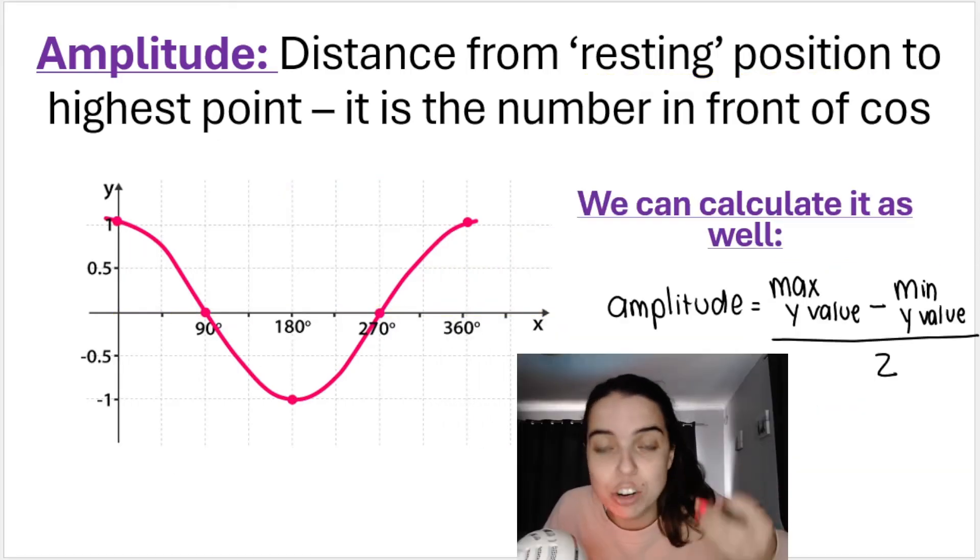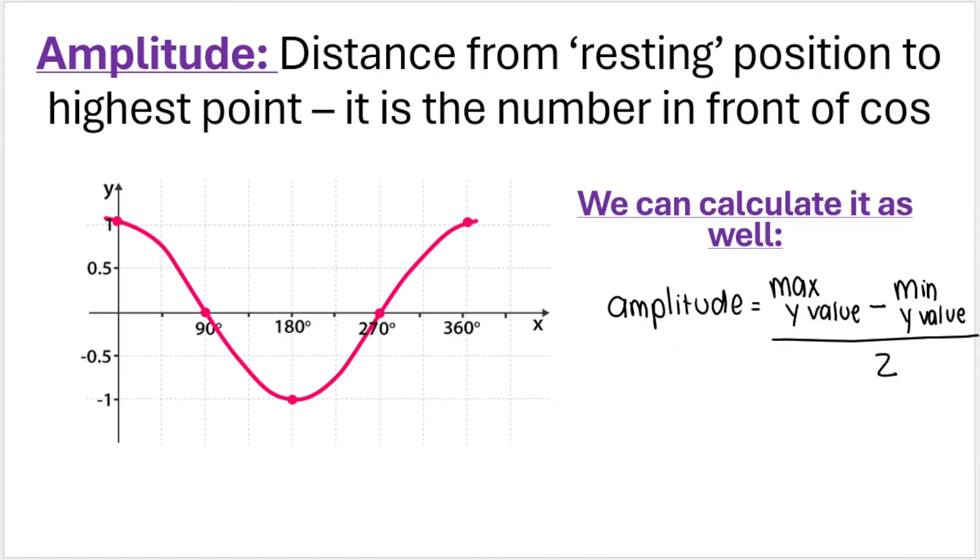And just like with the sin graph, we can actually calculate the amplitude. So you take the maximum y value, which is one in this case, so the amplitude is the maximum y value one minus the minimum y value which is negative one, so minus minus one, divided by two. That is two divided by two, which is one.